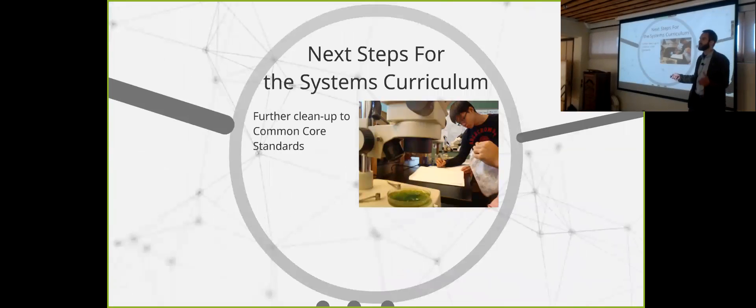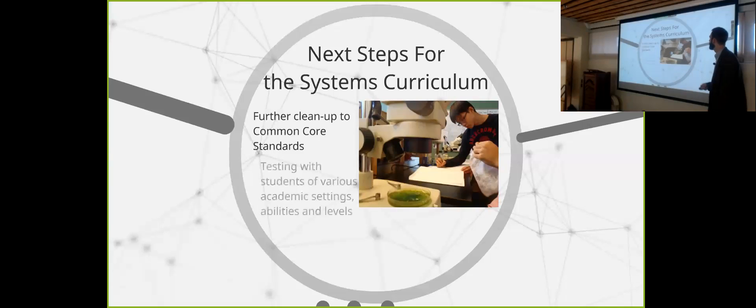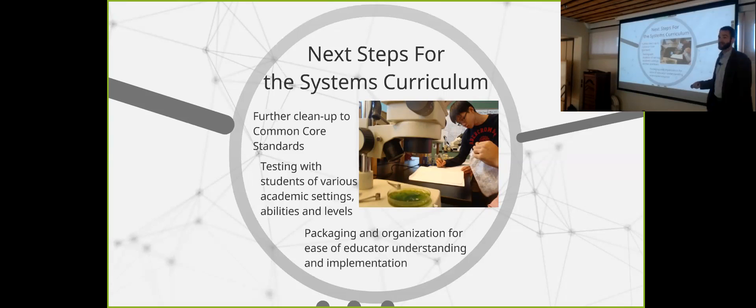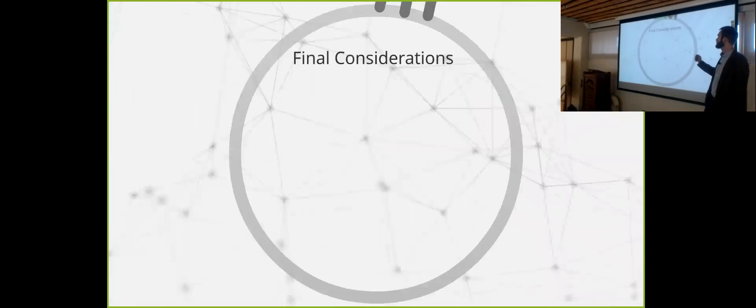Next steps for the systems curriculum. I got to – it was already aligned to Common Core Standards, but I got to clean it up a lot more significantly. I need to – I want to branch it out to other different testing environments, educational environments, like community college, get an elementary. Just see – I mean, I had 13 high-functioning high school kids. So I got to see where else it can roll. So – and then how would you package it and organize it for instructors and school districts to absorb and implement? So that's something I would need to clean up. I have pages of units and whatnot. And so final considerations.